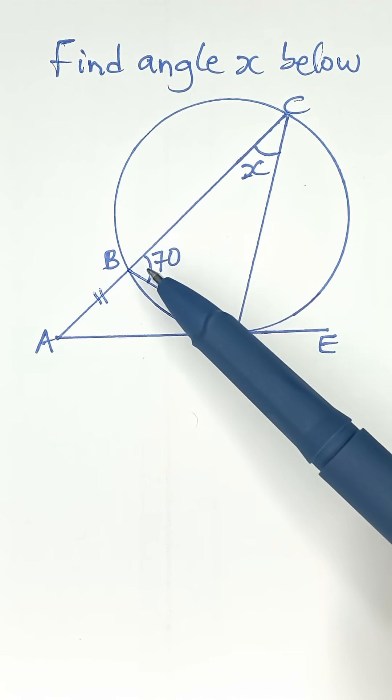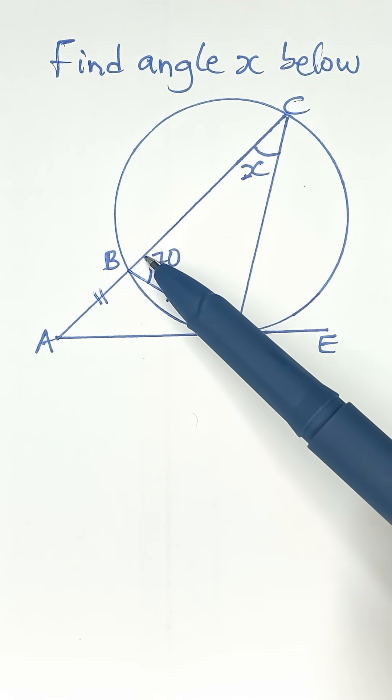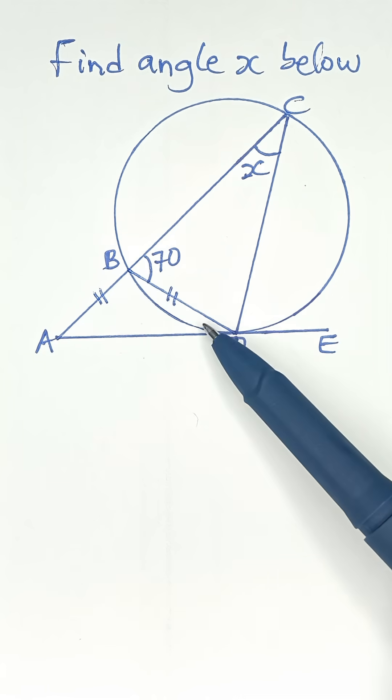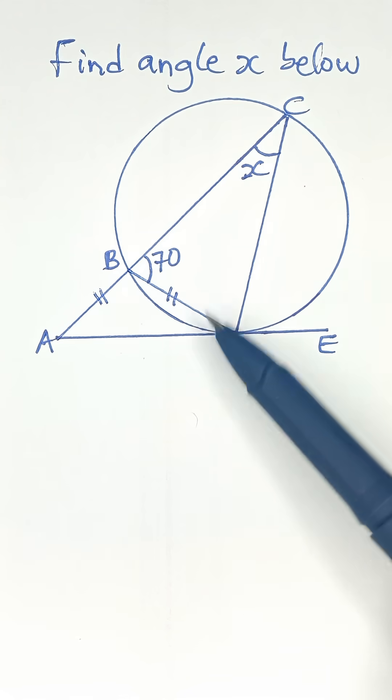So this angle plus this angle gives us 70. Since these two angles are equal because they are the base angles of an isosceles triangle, each of them must be 70 divided by 2.